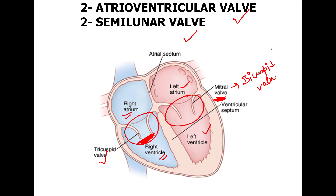The function of these valves is to prevent the backflow of blood. When blood moves from the right atrium to the right ventricle, and from the left atrium to the left ventricle, these valves close so that the blood does not flow back. This is the main function of the atrioventricular valves.